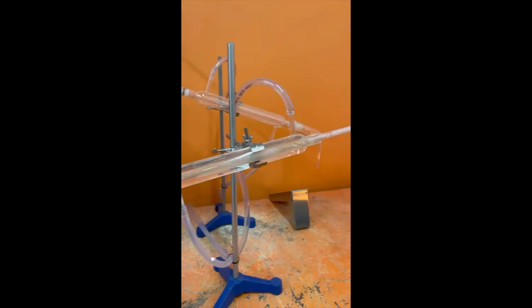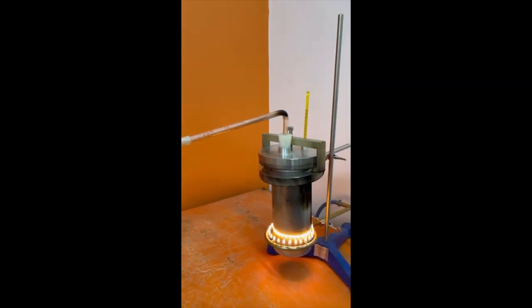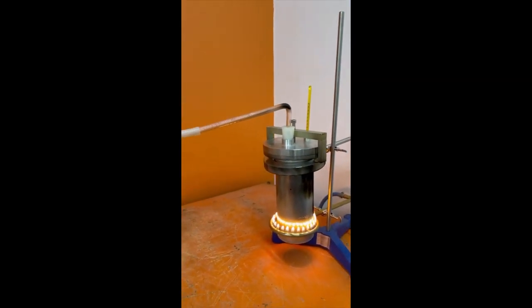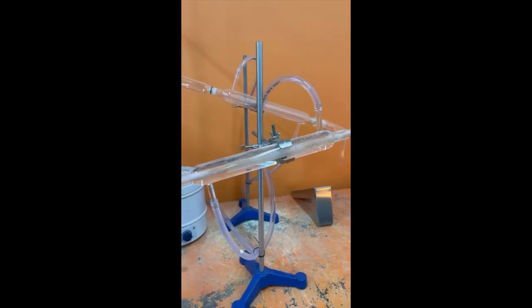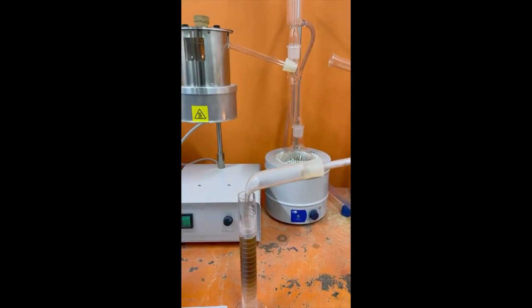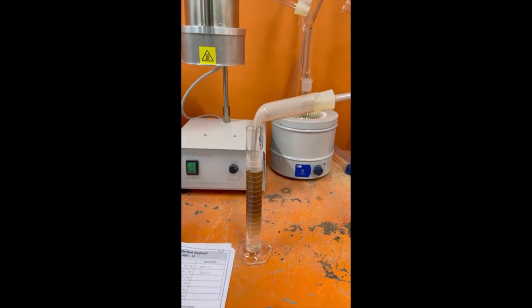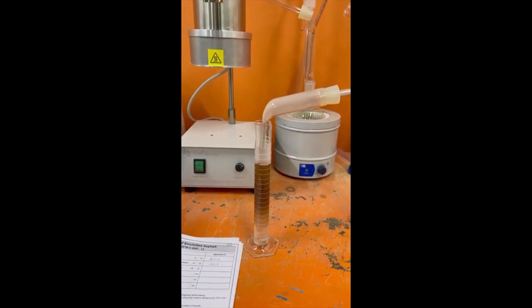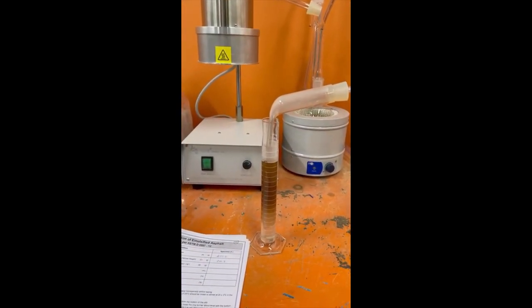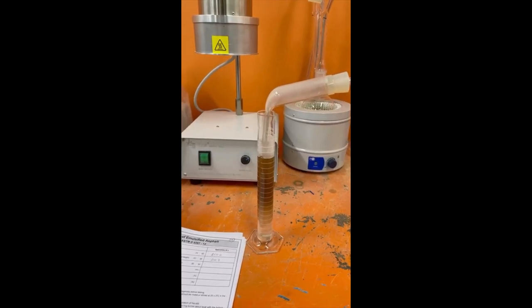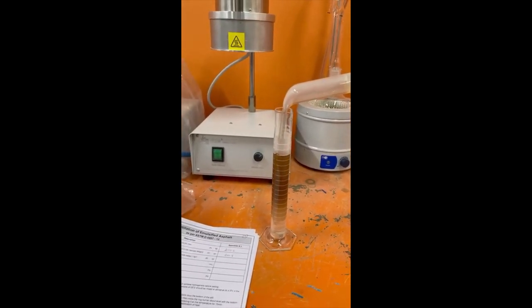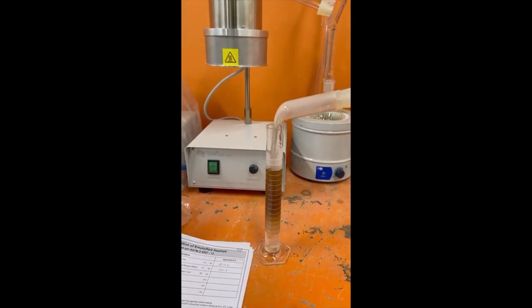This is a test of distillation of emulsified asphalt as per ASTM D6997. Now as we can see, we can calculate the percent of the distilled oil and water coming from emulsified asphalt at 260 degrees.